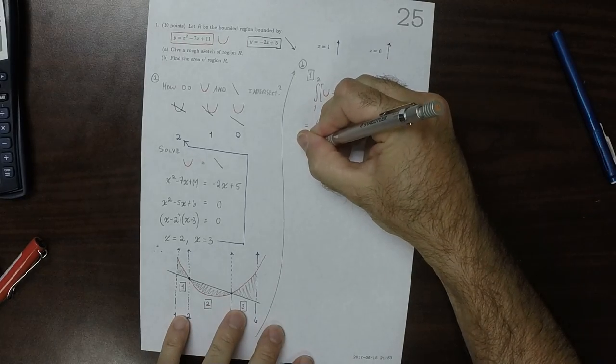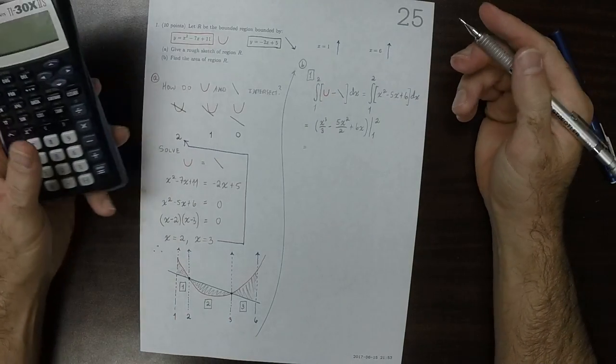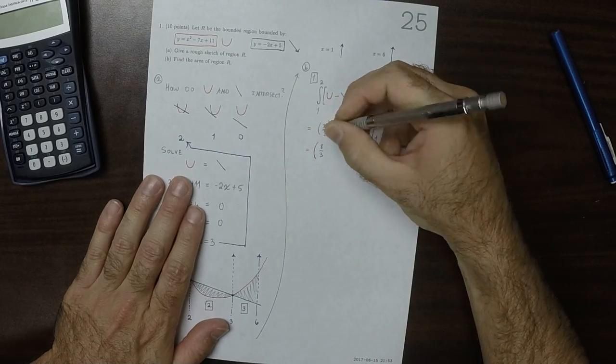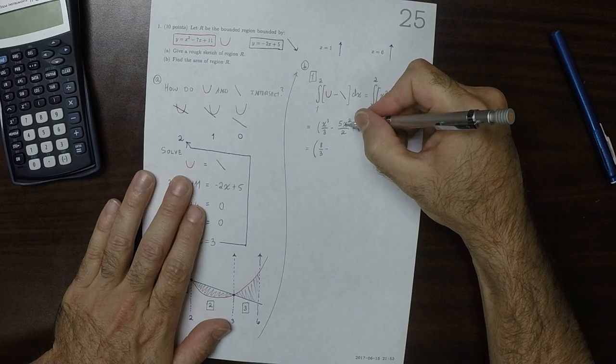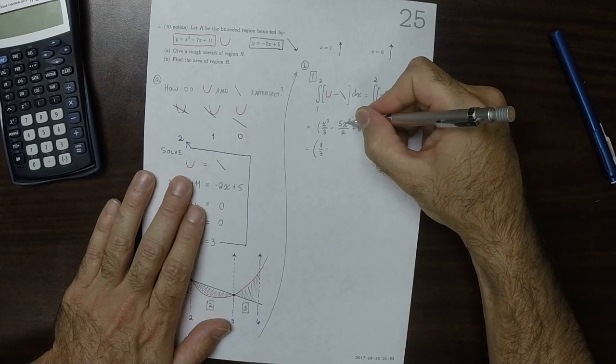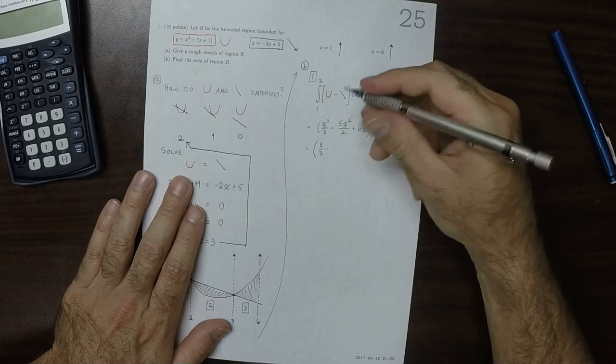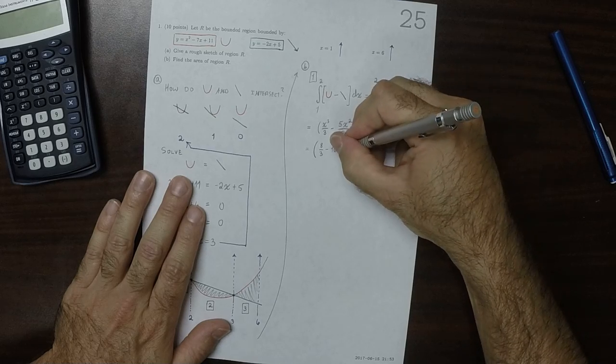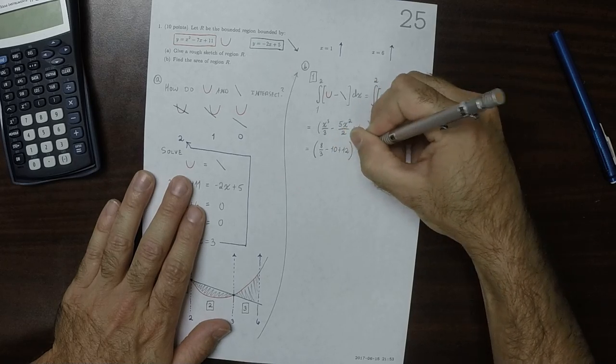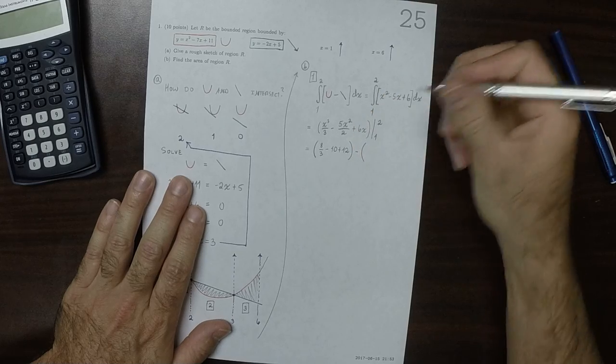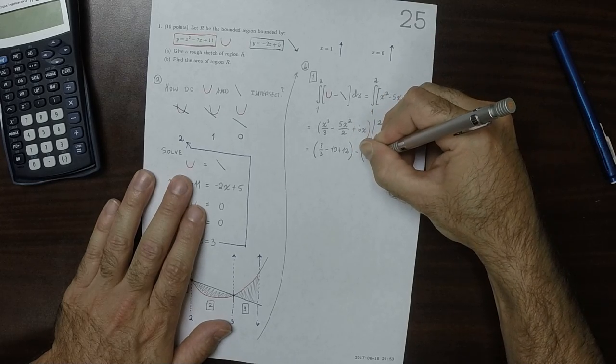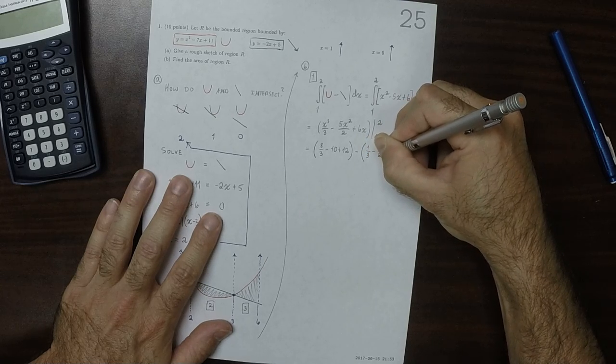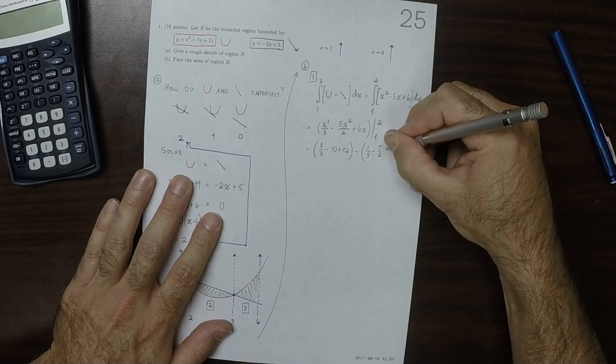Okay, so let's do this arithmetic very carefully. So that would be what? So that'd be 8 thirds minus, so that'd be 4, 5 times 4 is 20, and then over 2 is 10, so minus 10. And then plus 12. That's the evaluation at 2. And then minus the evaluation at 1. That'd be 1 third minus 5 halves plus 6.